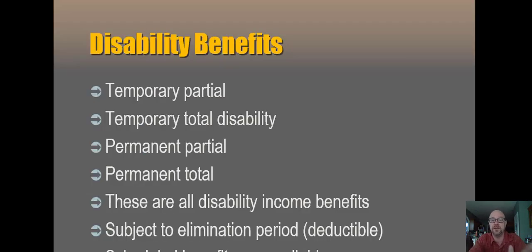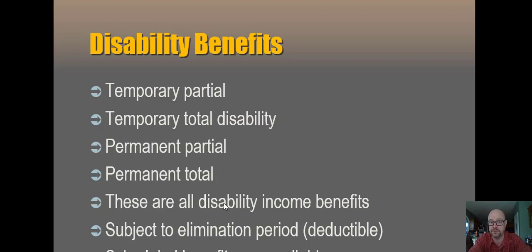When we talk about disability benefits specifically, there are several types. The easiest to imagine but actually the rarest is permanent total disability — you are never going to be able to work again at all. When that happens, benefits will be paid over a long period of time, usually two-thirds of salary. It's a really awful financial outcome because you take a step down in your standard of living — even with some tax benefits for being permanently and totally disabled, it usually causes serious financial problems for the family.